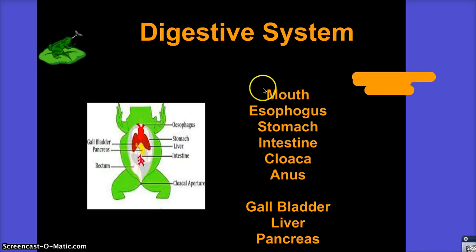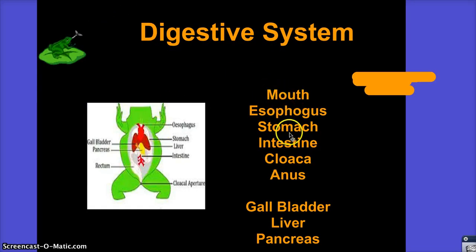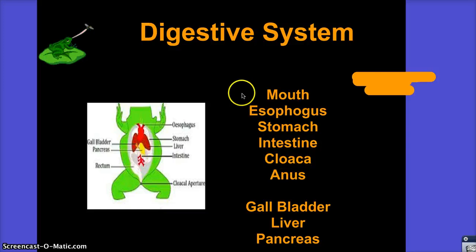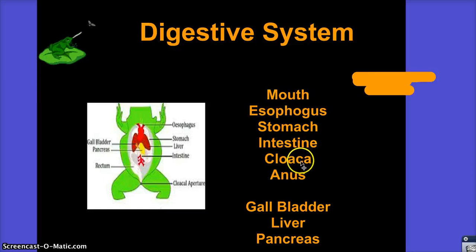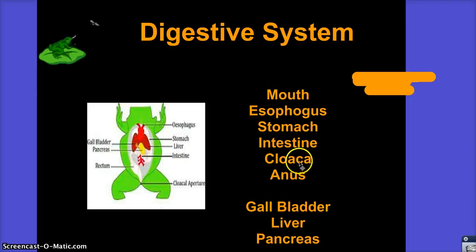For the digestive system, similar to the fish, we have the mouth, esophagus, stomach, and intestine. You want to know that after it travels through these, it's going to exit through the cloaca and out the anus.